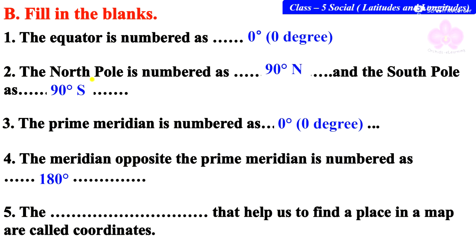Fifth, the answer is grid numbers. These are the numbers of latitudes and longitudes that help us find a place in a map, called coordinates.